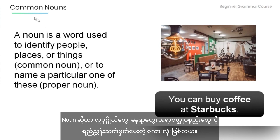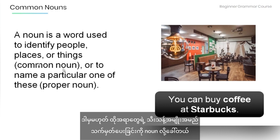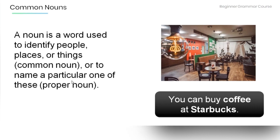So a noun is a word used to identify people, places, or things. These nouns are called common nouns. Or, a noun is a word used to name a particular one of these, and that is called a proper noun.